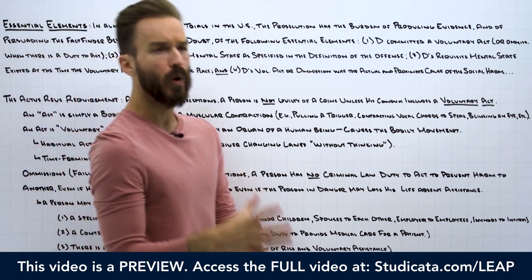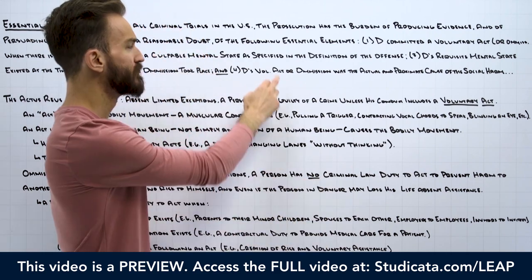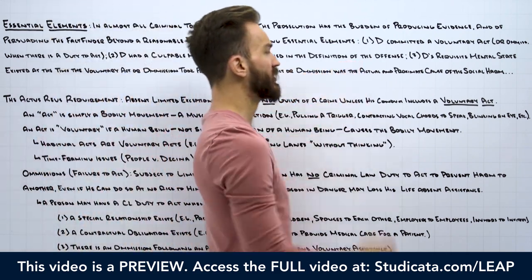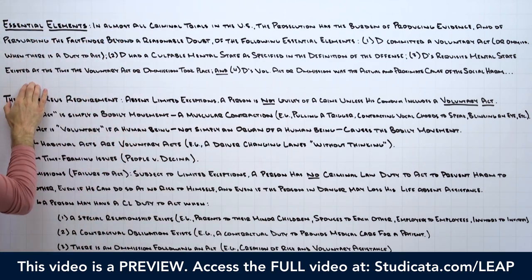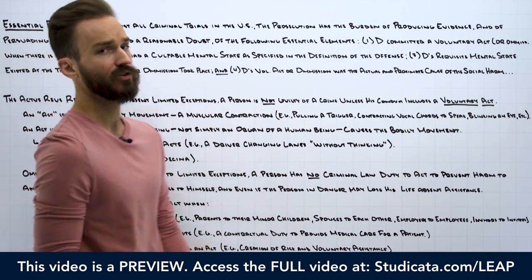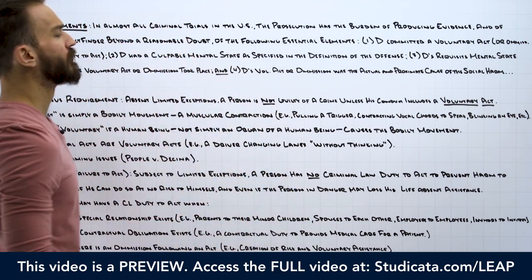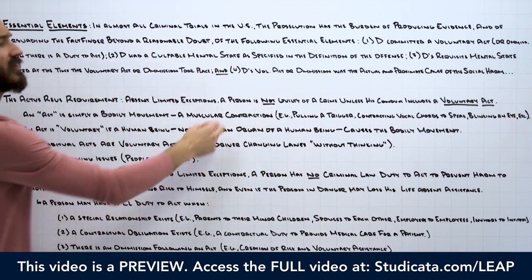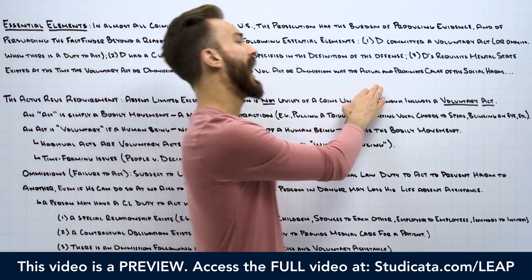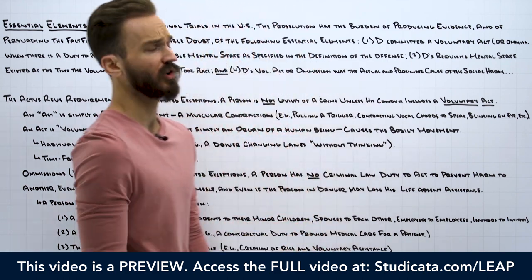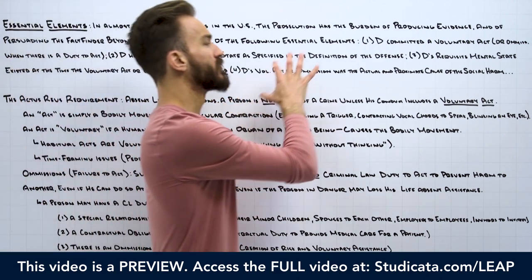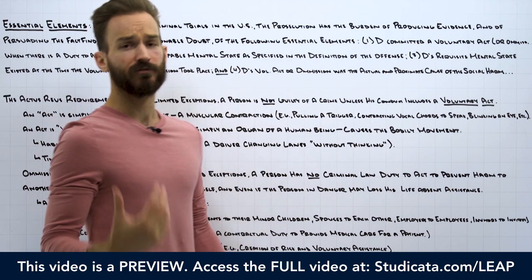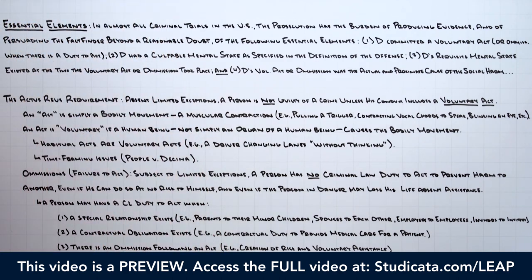Number two, that the defendant had a culpable mental state specified in the definition of the offense. Number three, that the defendant's requisite mental state existed at the time the voluntary act or omission took place. And number four, that the defendant's voluntary act or omission was the actual and proximate cause of the social harm as specified in the definition of the offense.